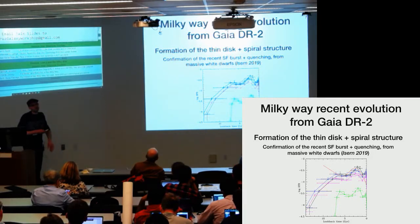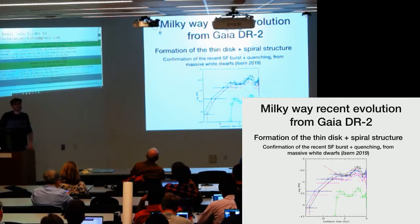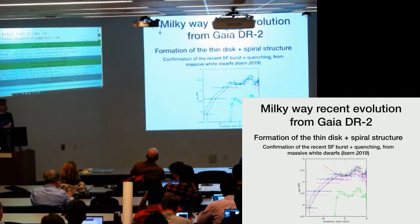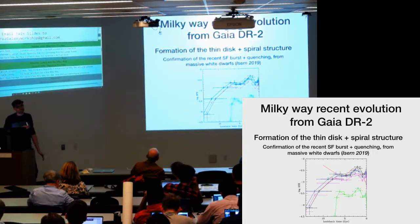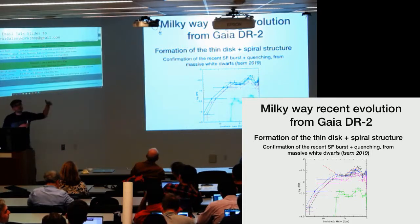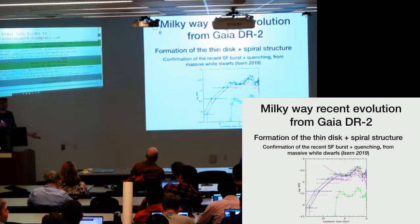Question about current-day star formation rate: it's about one solar mass per year. The idea is that probably we are just starting the quenching of the Milky Way now. Looking at the overall curve, at the current day it is not as low as a quenched galaxy.